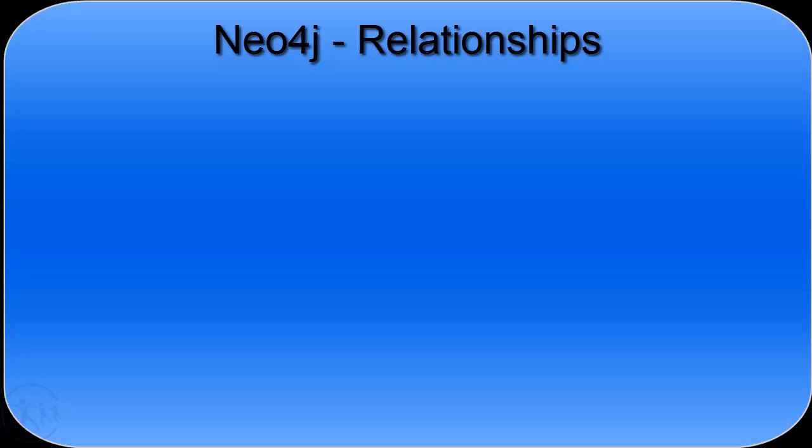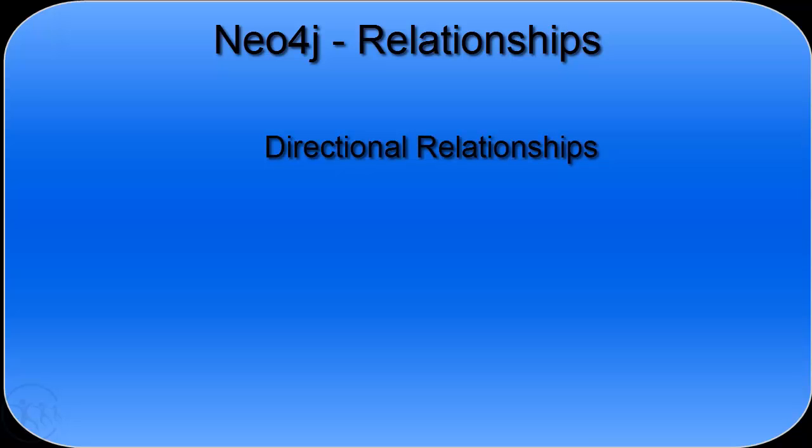Neo4j is a property graph database, and therefore follows the property graph model to store and manage its data. Because Neo4j follows the property graph model, relationships should be directional. If they're not directional, Neo4j will throw an error.